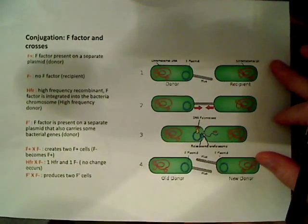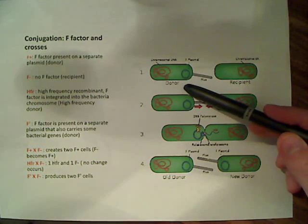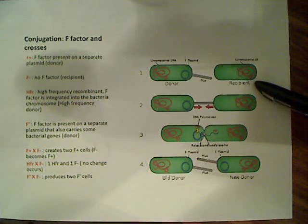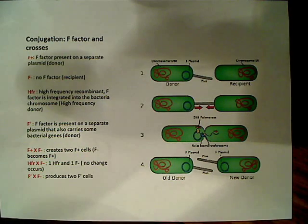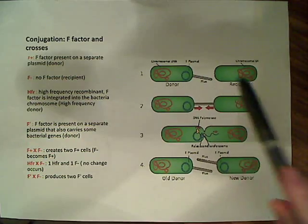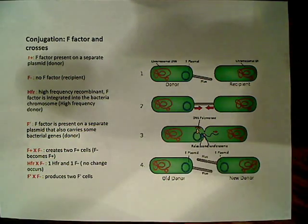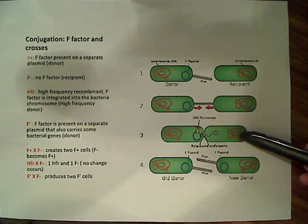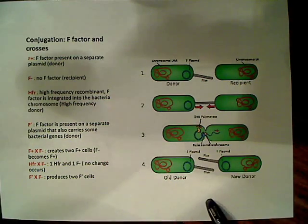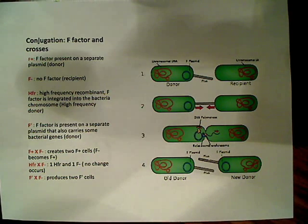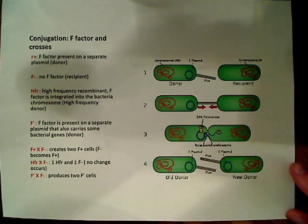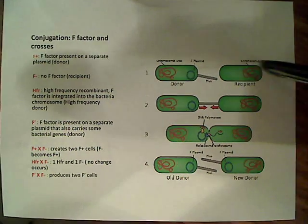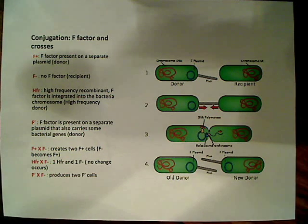I have a diagram here which shows the process. You see the donor and the recipient — the donor is either F+, F-prime, or HFR. Here's the F-factor plasmid, here's the pilus, you have your direct cell-to-cell contact occurring, and DNA polymerase making new DNA that's being synthesized and transferred over to the recipient. When this process is completed, both the old donor and the new recipient now have the F-factor plasmid and are both considered F-plus.